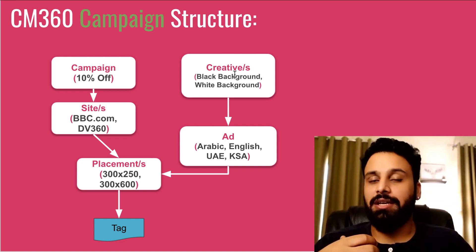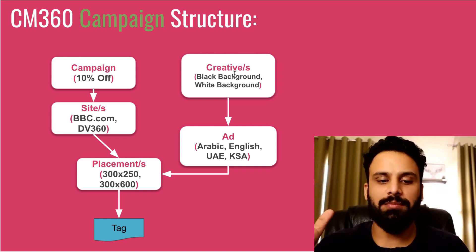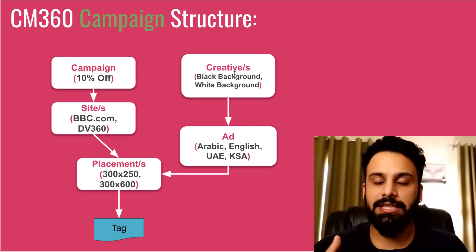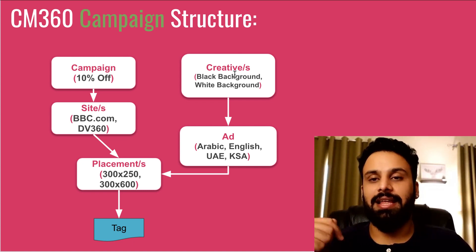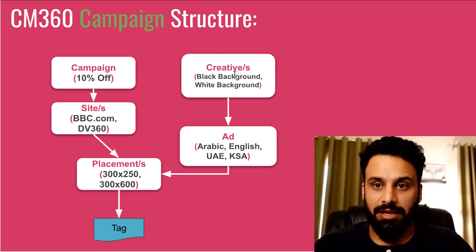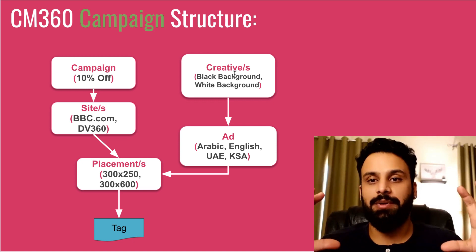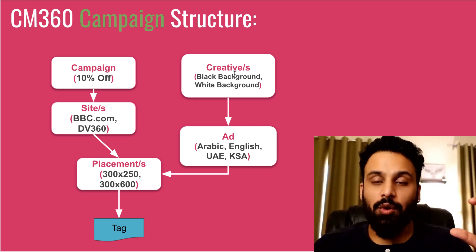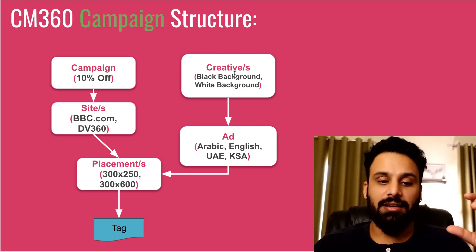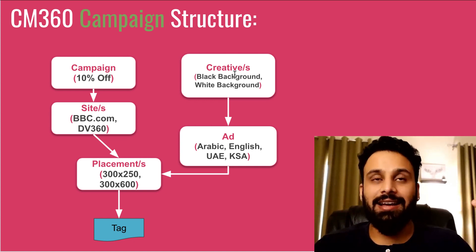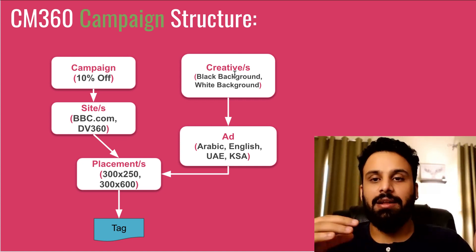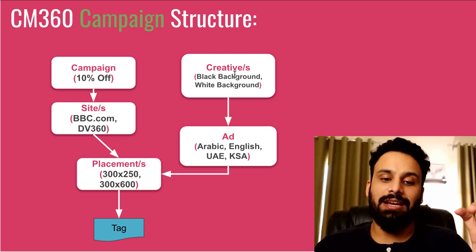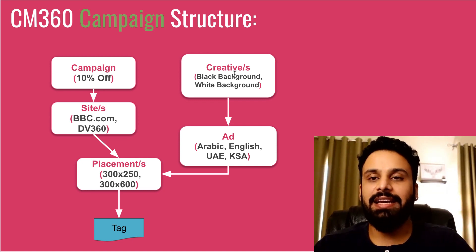If you have two sizes, you create two placements, generate two tags, and give both to BBC. After creating a placement and generating a tag, you also need to create an ad and target it to the placement. An ad is like a line item targeted to a placement. You can create multiple ads targeted to the same placement. Each ad contains the creatives — the actual ad that will serve on that placement's tag.